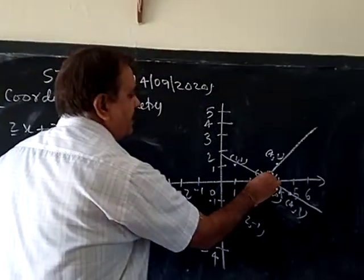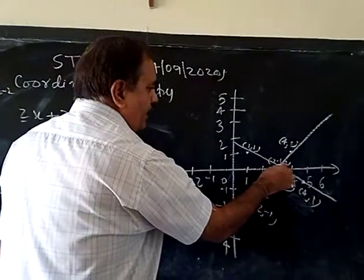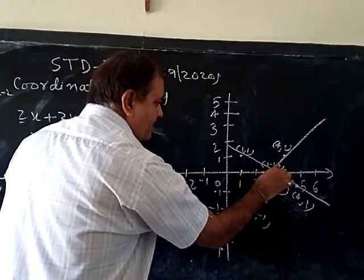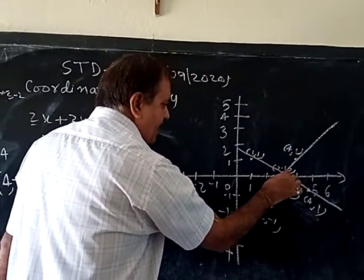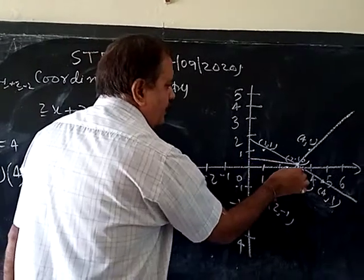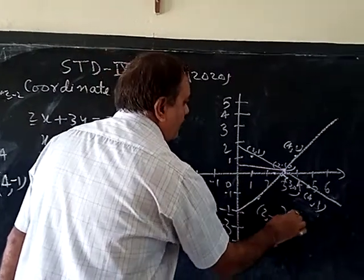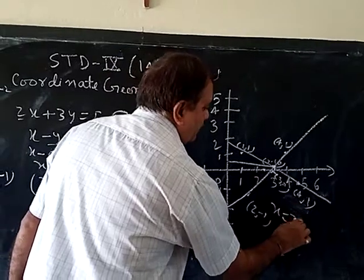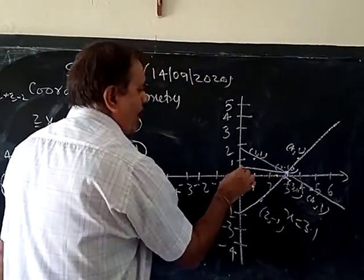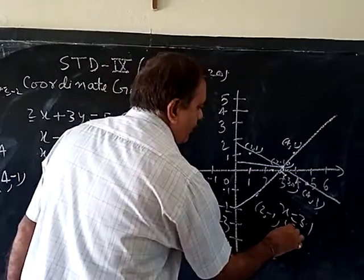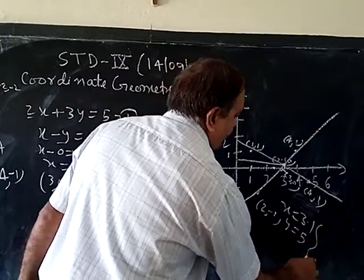Now this is the intersecting point of both the lines. From here, draw the line straight, perpendicular line on x-axis as well as on the y-axis. This value will give the value of x. Suppose it is 2, 3.1. And y value, this is 0.5. This is our answer.